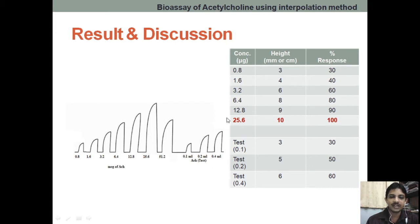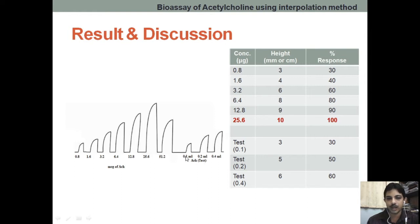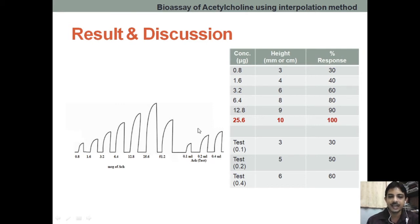In the test concentration, we do not know the concentration — we need to find it. We have to calculate what is the concentration of acetylcholine in the test sample. So we are going to inject 0.1 ml, 0.2 ml, and 0.4 ml of the test solution and we are going to get the graph.